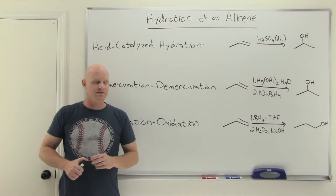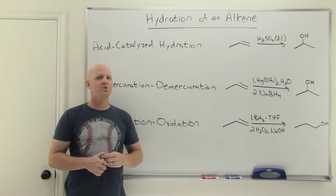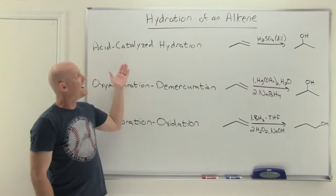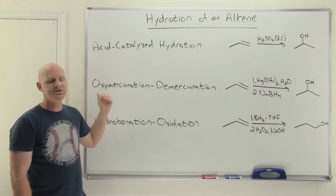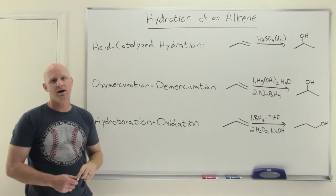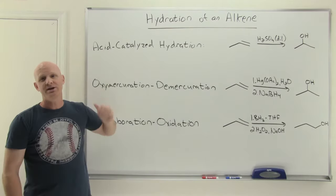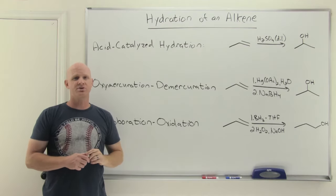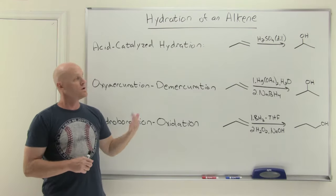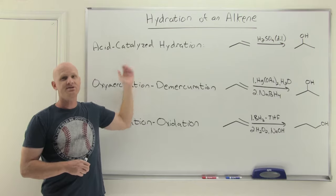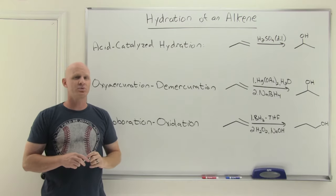Hydration of an alkene will be the topic of this lesson. We've got three methods: acid-catalyzed hydration, oxymercuration-demercuration, and hydroboration-oxidation. Acid-catalyzed hydration goes Markovnikov for regioselectivity, has no stereoselectivity, proceeds through a carbocation intermediate, and in some cases is subject to rearrangements.